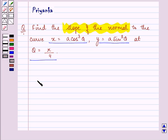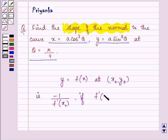So the slope of the normal to the curve y equals f of x at (x0, y0) is minus 1 upon f dash x0, if f dash x0 is not equal to 0.